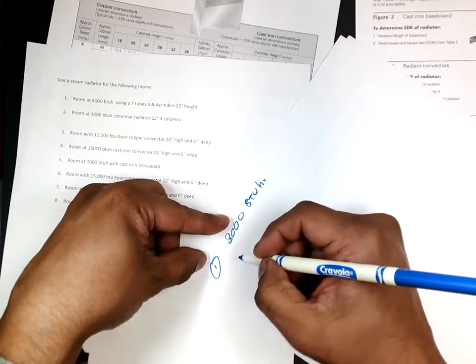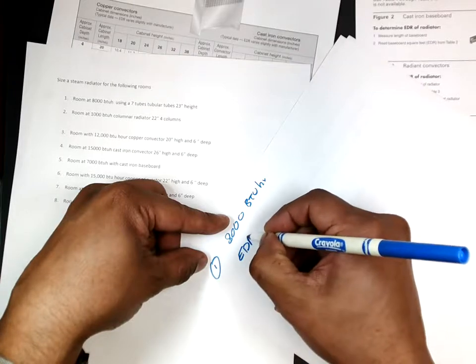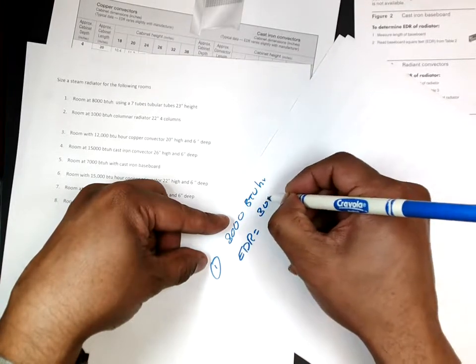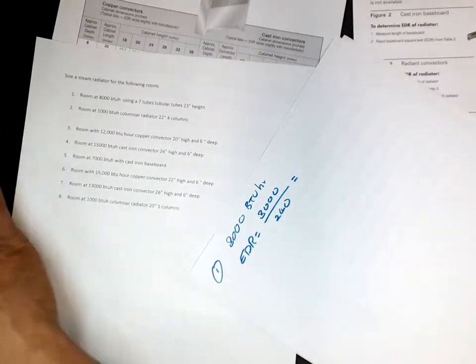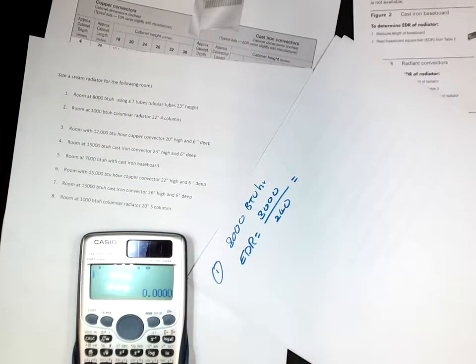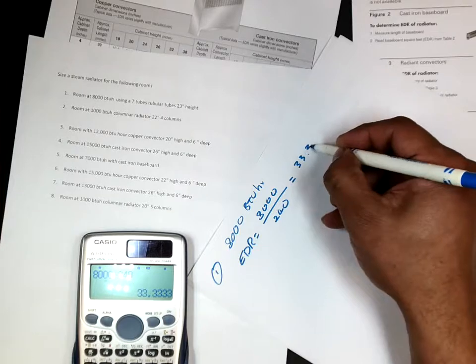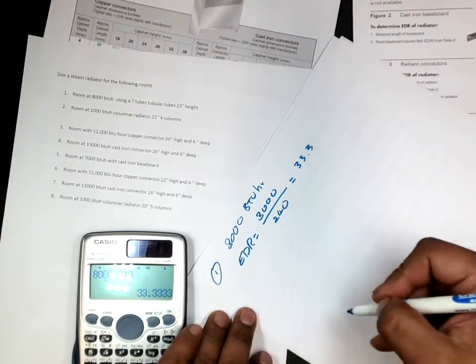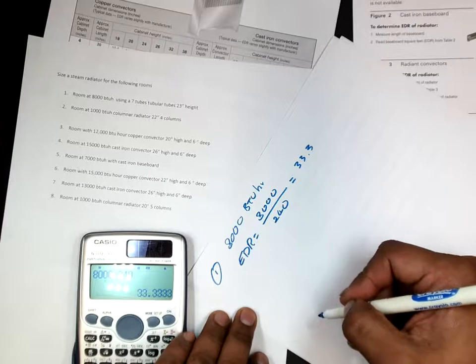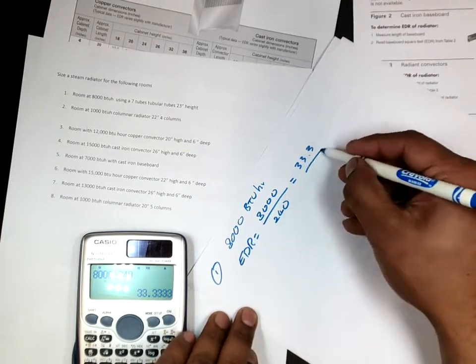The first thing I want to do is convert that into EDR. So EDR equals 8,000 over 240, and I get what? 33.43. Test voice too. What? It does record voice as well. So this is my EDR required.